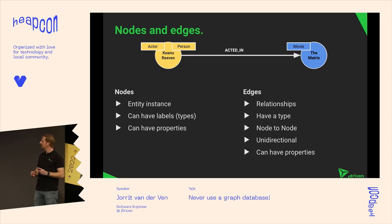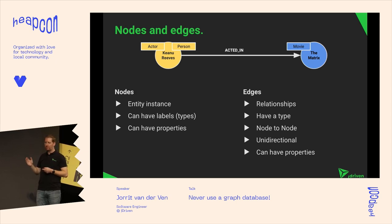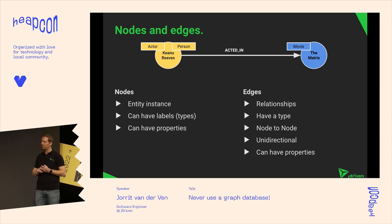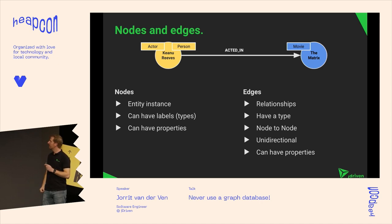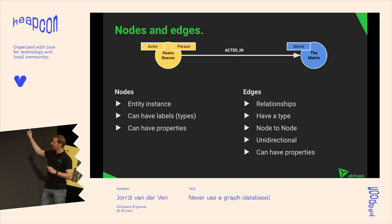In labeled property graphs, everything is stored as nodes and edges. If in a relational database everything is a row, here everything is a node. If I want to store an actor, I create a node with the information about that actor. A node can have zero or more labels — so Keanu Reeves is both a Person and an Actor. You can add properties to that node, like name or birthday. Between nodes you can create relationships called edges, which always have a type — for example, Keanu Reeves ACTED_IN The Matrix. Edges are always node-to-node, so you can't have relations between other relations.